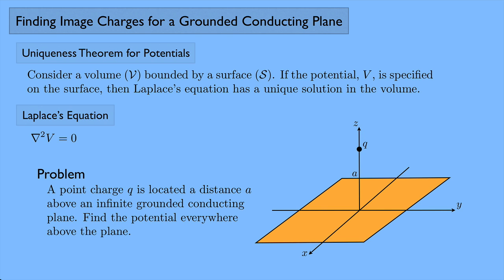We're going to use the uniqueness theorem as a way of figuring out a trick to get the potential everywhere above the plane. The uniqueness theorem says if we have a volume bounded by a surface and the potential specified on the surface, then Laplace's equation has a unique solution. So if we can find a solution that matches the boundary conditions, that has to be the right solution — there's only one solution. That's the idea behind the method of images.